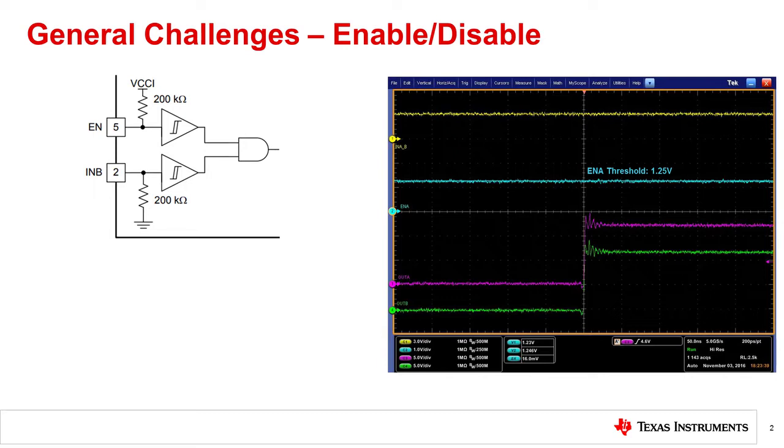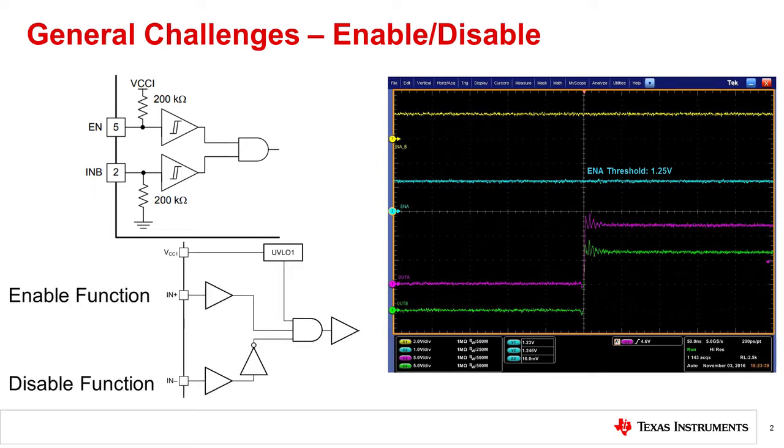Some drivers use differential signaling for added input noise robustness, but if the differential inputs are not required, the other input may be used as an enable or disable pin, depending on the input polarity.